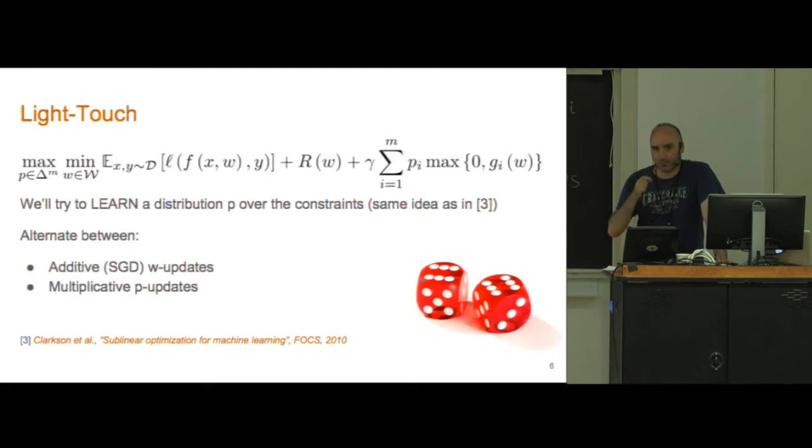The distribution is supported on the constraint indices. You can see here it's quite clear that if we maximize over this distribution while holding everything else fixed, then ultimately the distribution will be supported only on the constraints that are the most violated.